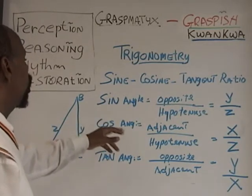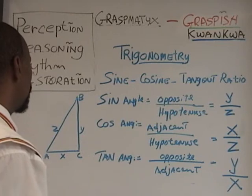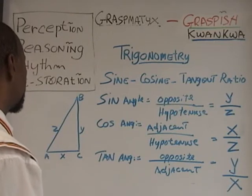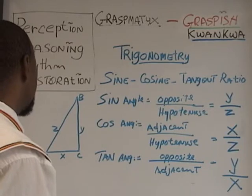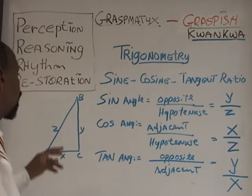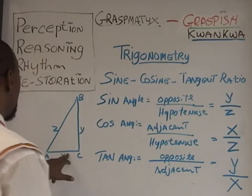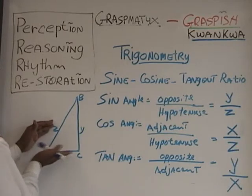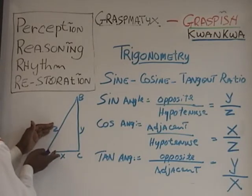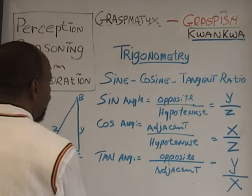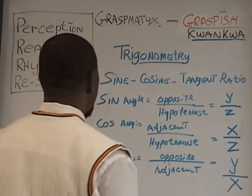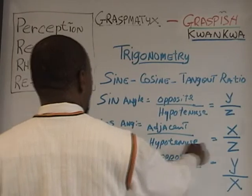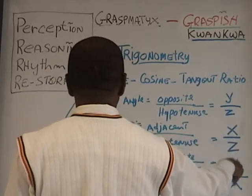For the cosine angle, it would be adjacent above the hypotenuse. This line here is known to be adjacent to it. That's why we title this X, so you can see the difference. So adjacent over hypotenuse would be X over Z.